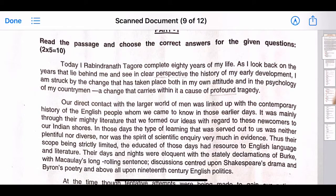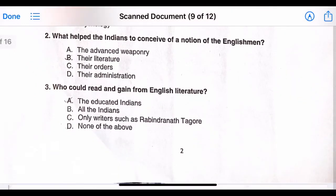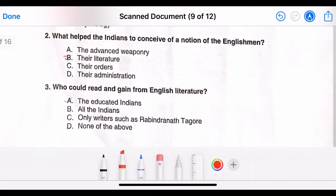The first one is read the passage and choose the correct answer for the given questions. The first question is from the first paragraph, give a synonym of deep. The correct answer is option B, that is profound. Number two, what helped the Indians to conceive of a notion of the Englishman? The correct answer is option B, their literature.